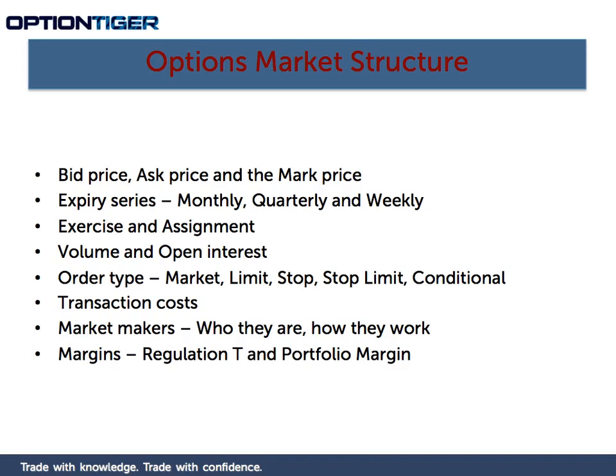Transaction costs really become an issue when you overtrade — buying 10 contracts, selling them, buying 20 more, and so on. Pretty soon your daily transaction costs are running into $50 or $100, which will eat into your profits. Always keep in mind that your strategies need to generate a good amount of profit, and you shouldn't be doing so many round-trip trades that your transaction costs add up excessively.